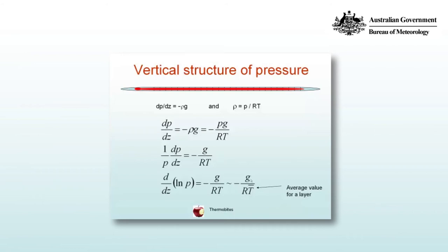We can now combine the hydrostatic equation with the equation of state or the ideal gas equation written in terms of the density rho equals p over RT. Substitute that into the hydrostatic equation and we can write dp/dz equals minus rho g equals minus pg over RT. Next step, divide both sides by the pressure, so on the left hand side we have one over p dp/dz and on the right minus g over RT.